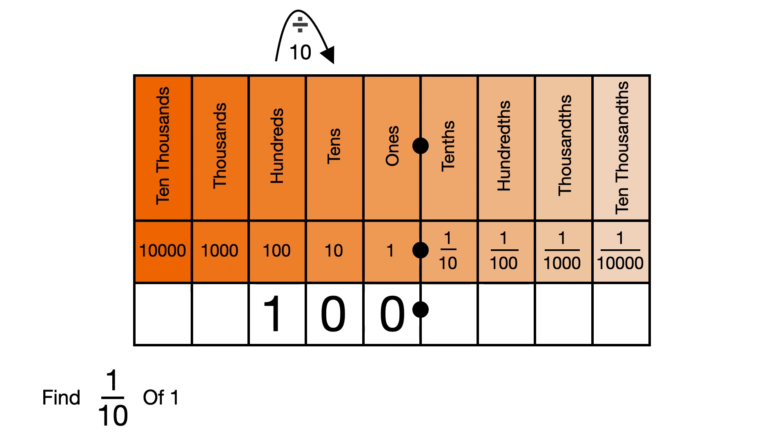If we move the digits in 100 one place to the right, we divide 100 by 10 and get 10. Now we don't need the 0 in the tenths column so we can get rid of that. If we move the digits in 10 one place to the right, we divide by 10 to get 1. And again we can remove the 0 from the tenths column.